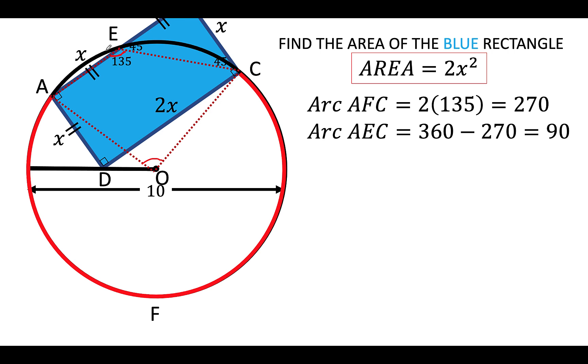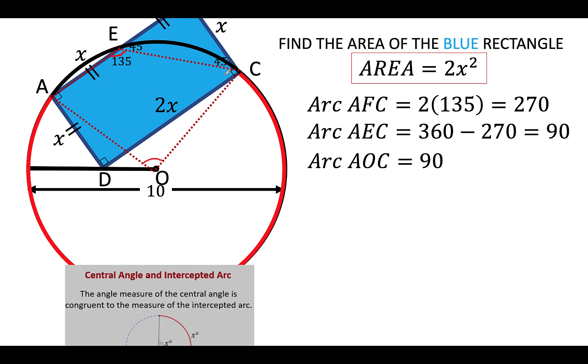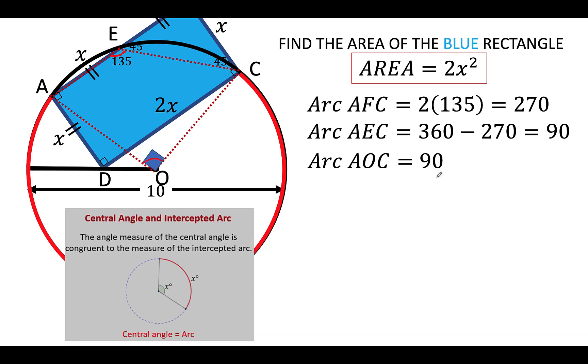Since the measure of arc AEC is equal to the measure of the central angle AOC, that means that angle AOC is equal to 90 degrees from the central angle theorem.